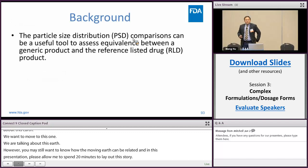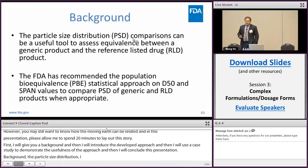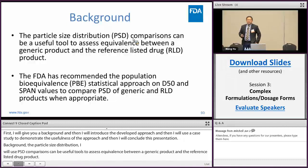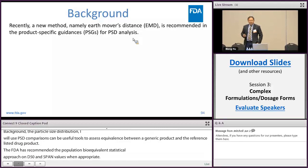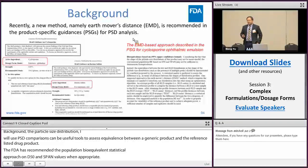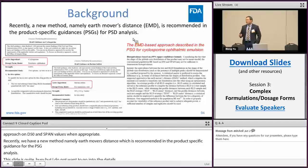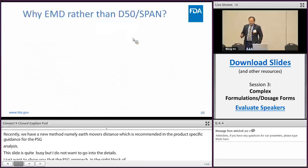Background. Particle size distribution — I will use PSD — comparison can be a useful tool to assess equivalence between a generic product and the reference listed drug (RLD) product. The FDA has recommended the population bioequivalence (PBE) statistical approach on D50 and SPAN values to compare the PSD of generic and RLD products when appropriate. Recently, a new measure, namely Earth Mover's Distance (EMD), has been recommended in product-specific guidance for PSD analysis. Two PSDs already recommend this approach, and the guidance gives detail on the utilization of the method.